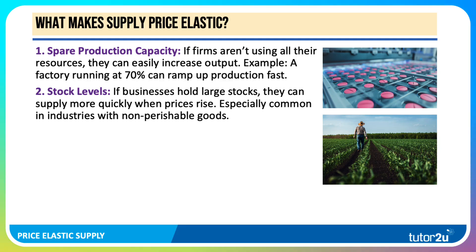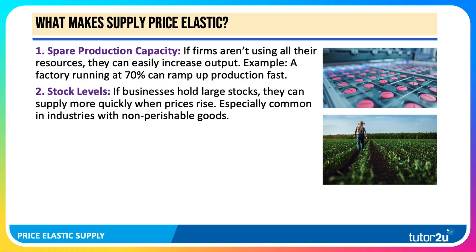Secondly, stocks. If businesses hold stocks — both of raw materials, components, and finished products — they can supply more quickly and easily when prices and demand go up. That's especially common in sectors with non-perishable goods, for example tinned food.